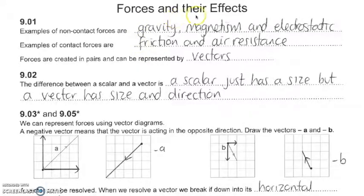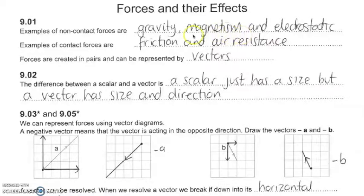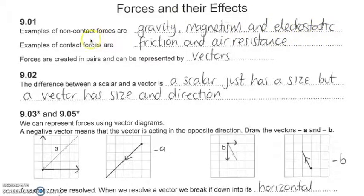This is P9, which is forces and their effects. We're going to look at some examples of non-contact forces: gravity from the gravitational field around planets or large bodies, magnetism where a north and north will repel and opposites attract, and electrostatic forces where a positive and negative charge will attract but two negative charges will repel. Examples of contact forces are friction and air resistance.